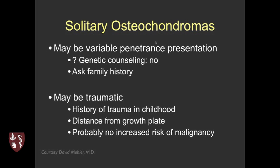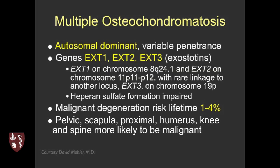Solitary osteochondromas are often just incidental with no strong family predilection and can occur from prior trauma. These probably don't have much increased risk of malignancy and are usually followed over time. This is to be differentiated from the hereditary disorder, which is autosomal dominant and has now been associated with specific gene products. These hereditary cases are thought to have a higher risk of malignant degeneration. More central lesions — pelvis, scapula, humerus, knee — tend to be more likely to be malignant.